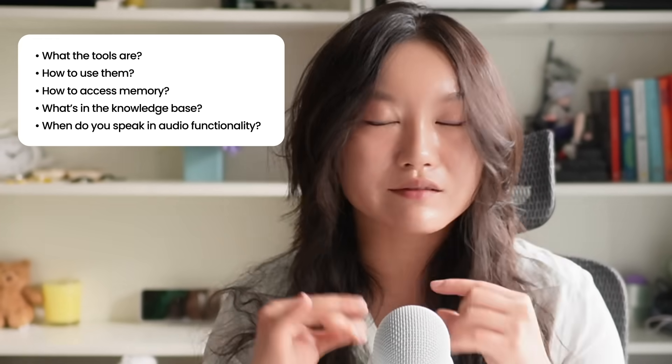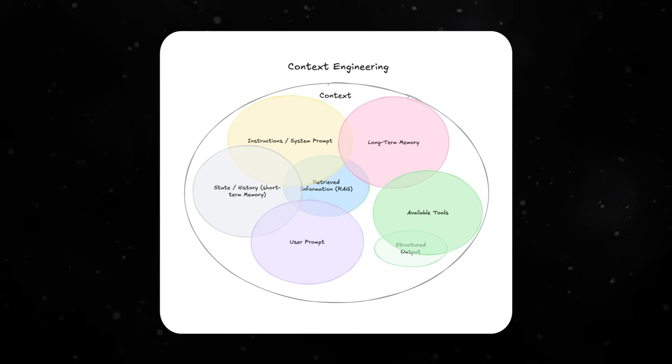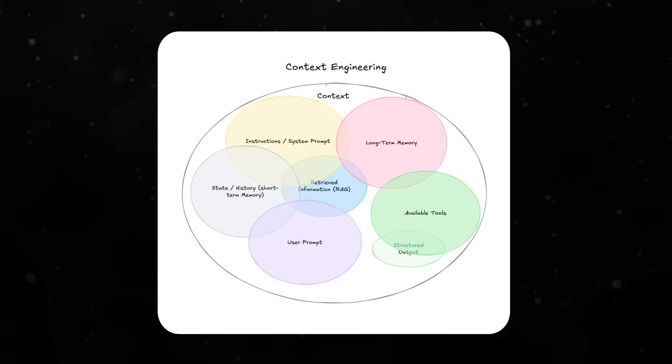Continuing this analogy, imagine you're an alien who doesn't understand how burgers work — whoever is telling you to make a burger needs to provide an instructions manual telling you the bun goes on either side, then vegetables, condiments, and patty in the middle. It's the same for AI agents. You can have all these components, but you need an instruction manual for how they all fit together. That is where the context engineer comes in — crafting the prompt that details how everything works: what the tools are, how to use them, how to access memory, what's in the knowledge base, when to use speech and audio. It's really important to get this prompt right.